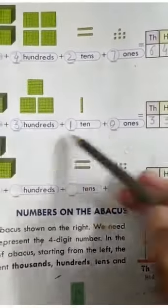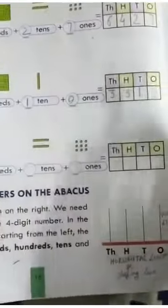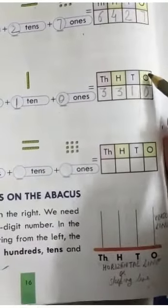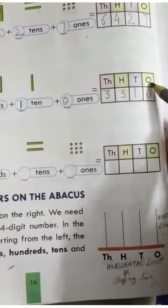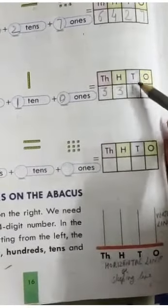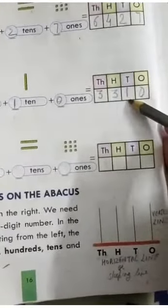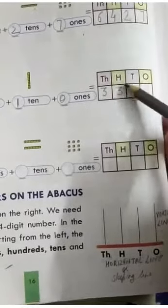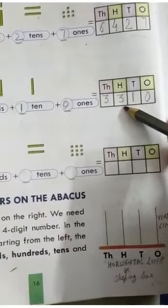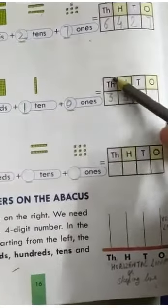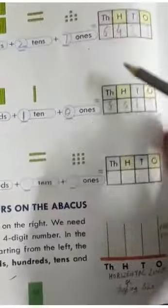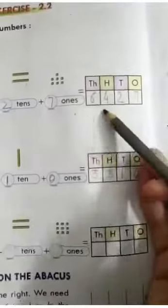You will place these digits under the place value chart. Under 1s you will write 0, under 10s you will write 1, under 100 you will write 3, and under 1000 you will write 3.